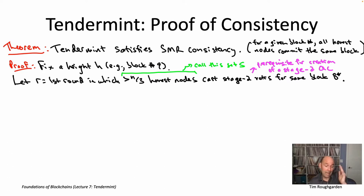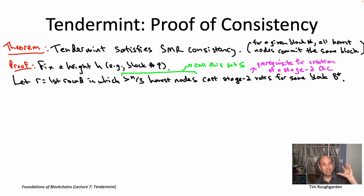A stage-two QC is certainly not necessarily created in round R, but it's certainly not created in any round prior to R. We're now going to proceed to show that there will literally never be any stage-two quorum certificate created for any block other than B*. Therefore, it will never be the case that any honest node commits a version of block number nine for any block other than B*. You might be worried that nobody ever commits any block at all — but that's really the responsibility of the liveness proof we'll argue in the next video. For now, we're just trying to argue that you never have commits to conflicting blocks.